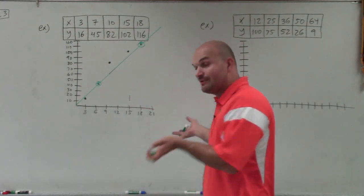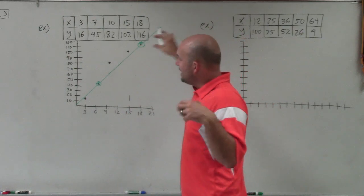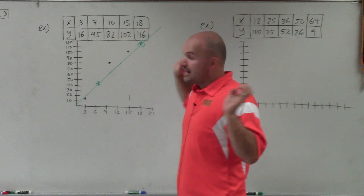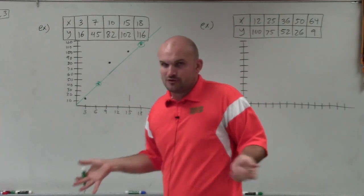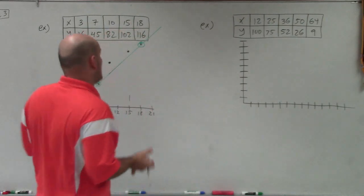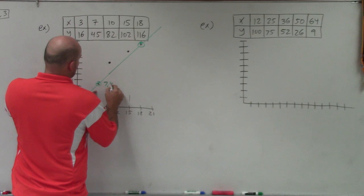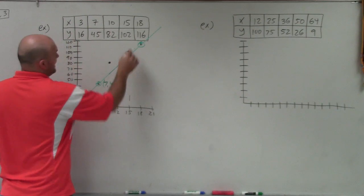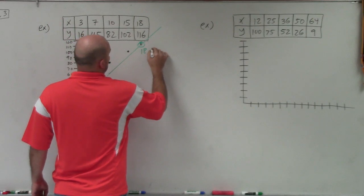So remember, now, if I want to write the equation, I created the scatter plot, I sketched the trend line. Now what I want to do is create the equation. Well, how do you create an equation just from a scatter plot? Well, we do know the values of these two points. This one is 7 comma 45. And this one is going to be 18, 116.